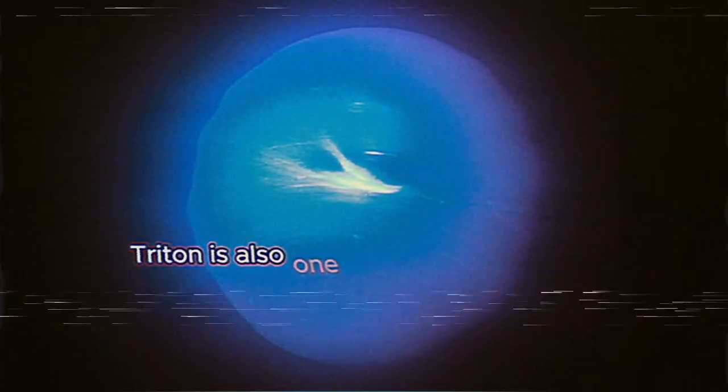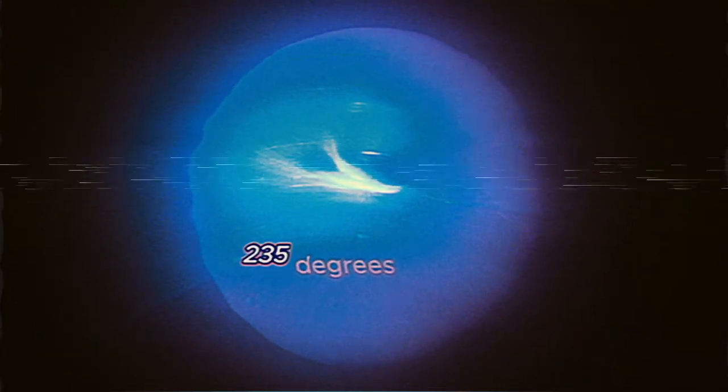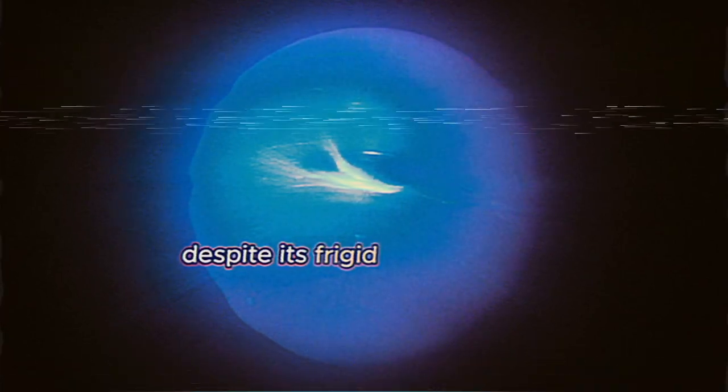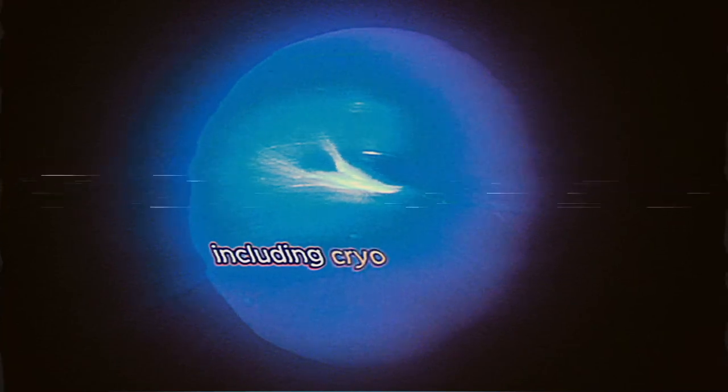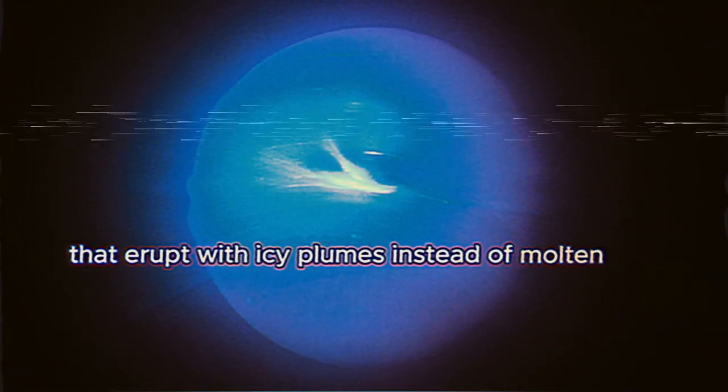Triton is also one of the coldest places in the solar system, with surface temperatures reaching as low as minus 235 degrees Celsius. Despite its frigid temperatures, Triton is home to fascinating geology, including cryo-volcanoes that erupt with icy plumes instead of molten lava.